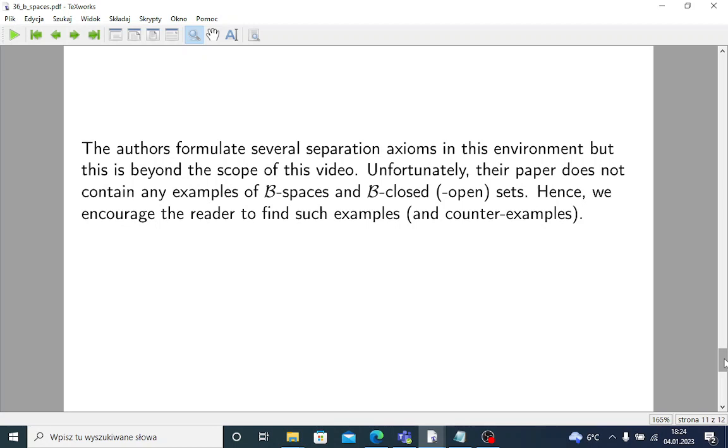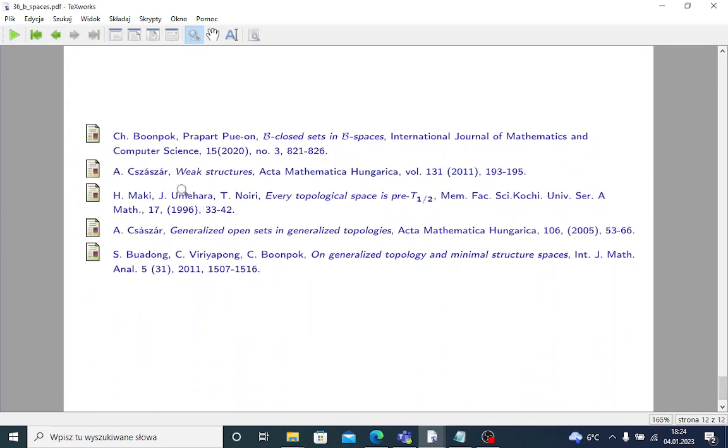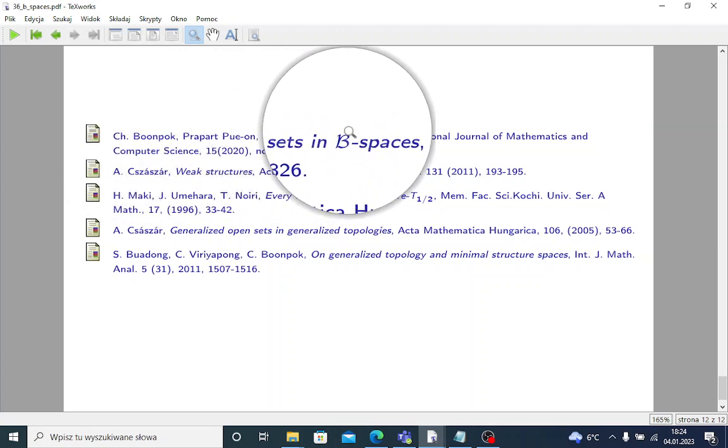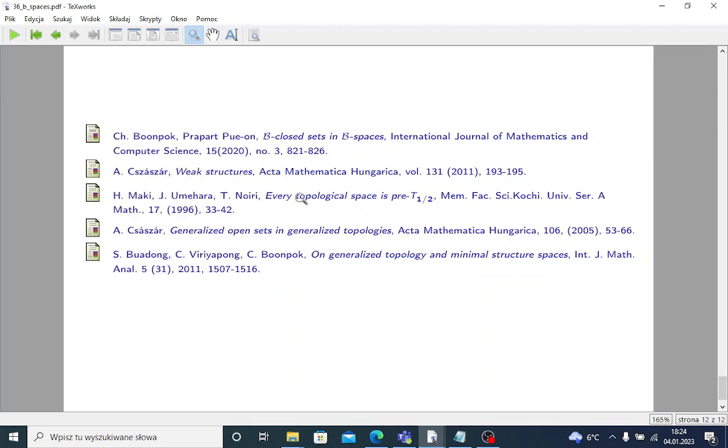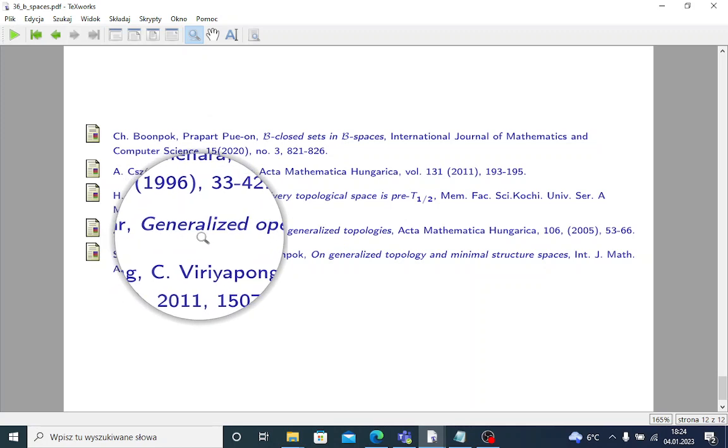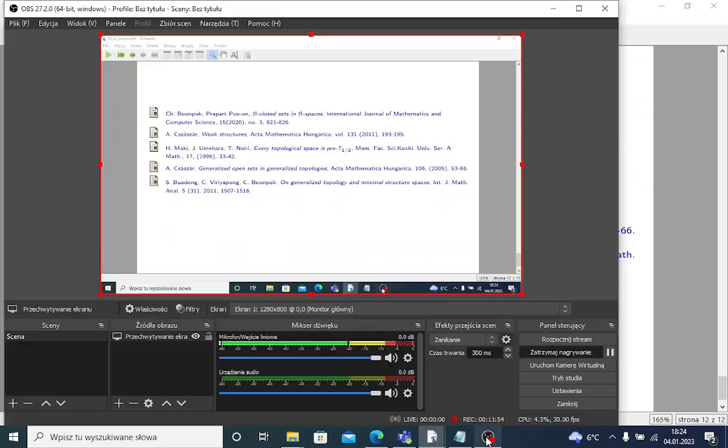Hence, we encourage the reader, of course, to find, to look for such examples and maybe counterexamples. And, as always, there is some bibliography here. This paper that we reviewed here is this one. And there are some other papers on weak structures, on minimal structures by Maki, Umehara and Noiri, about generalized topologies by Chasor, and about generalized topology and minimal structures by this Thai team Boadong, Viryapong, Bunpok. Thank you very much for your attention, as always.